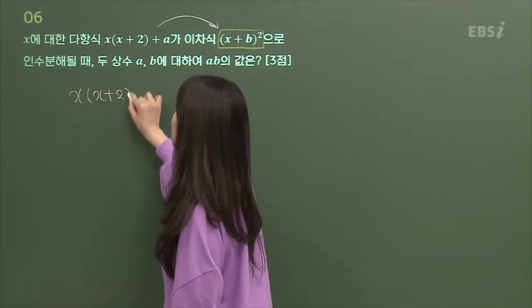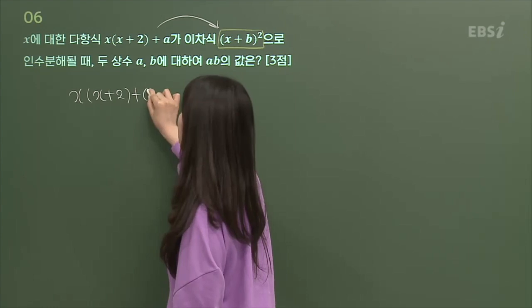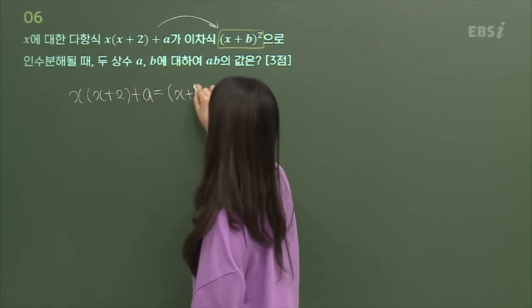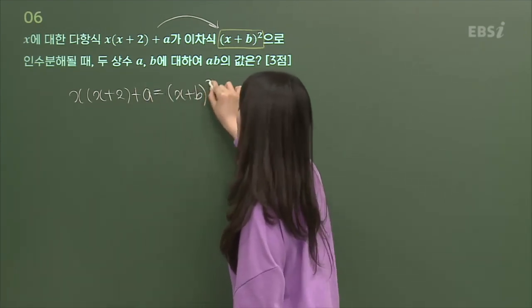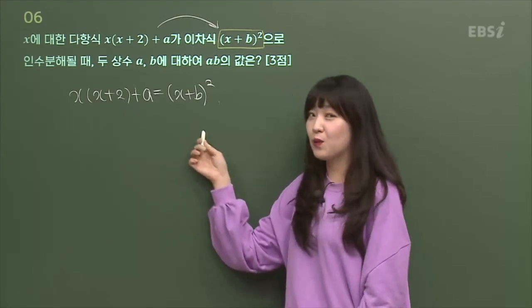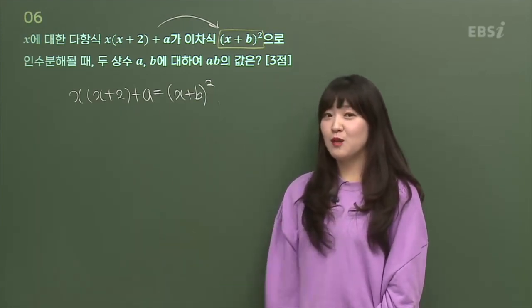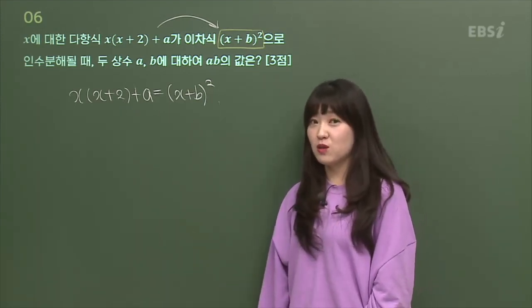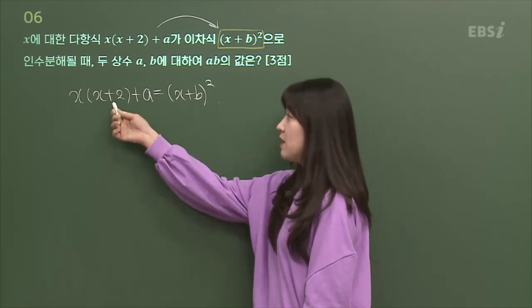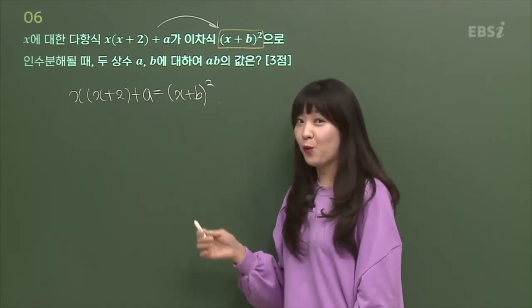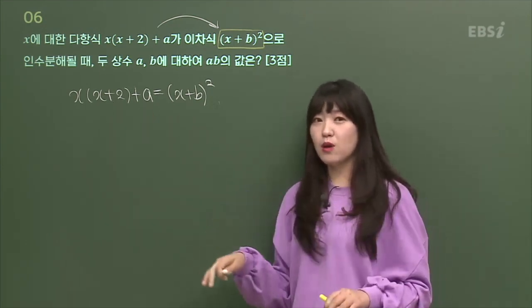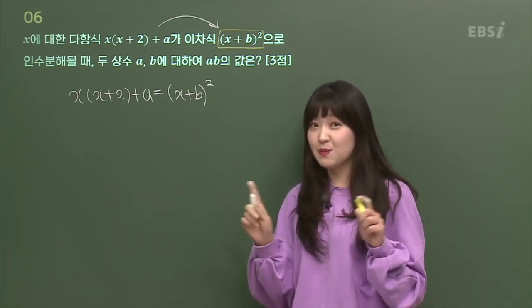X 더하기 E 더하기 A라는 애가 X 더하기 B의 제곱이야. 이거 아니야? 그냥 얘를 인수분해한 게 이거니까. 그럼 나 이 문제 어떻게 풀 수 있을 것 같아? 식 잘 봐봐. 얘랑 얘랑 같다며. 그러니까 그냥 싹 전개해서 비교해서 같으면 되는 거 아니야?